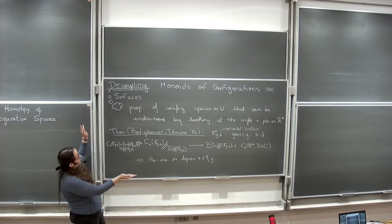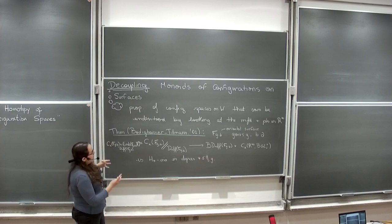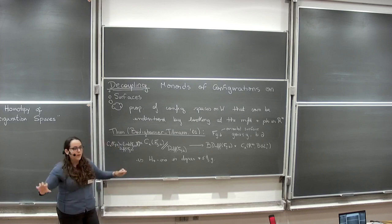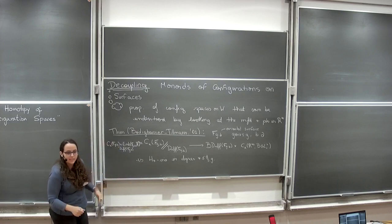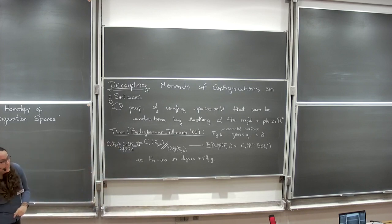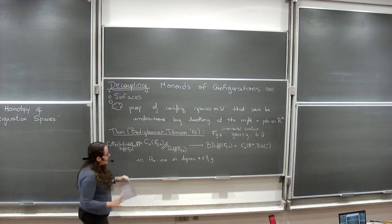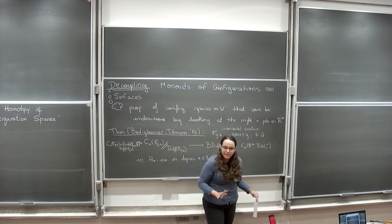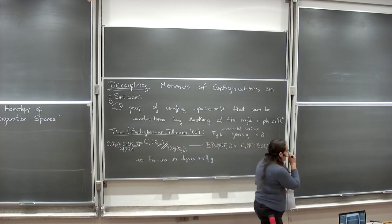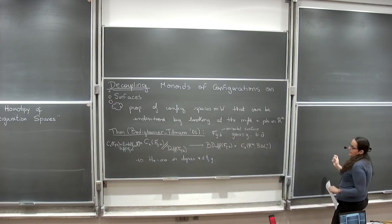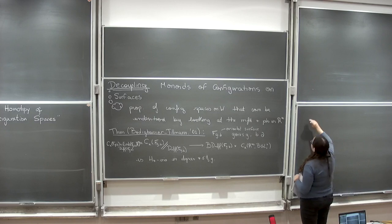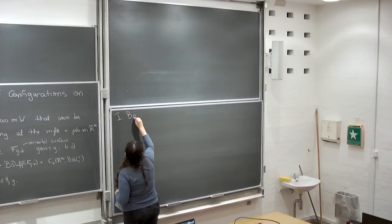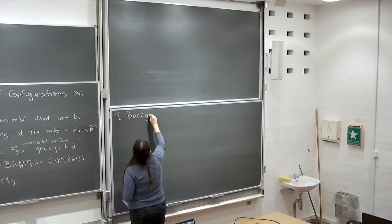As the title of my talk says, I'm going to show that if we look at monoids of configurations on surfaces, we also have a splitting result like this. I'll start by setting up some notation, and then move to the results.